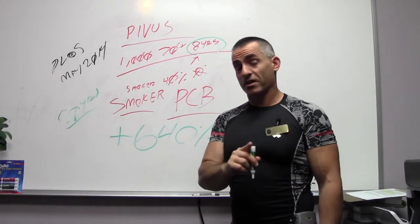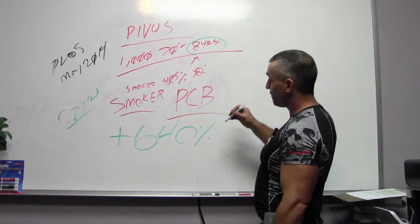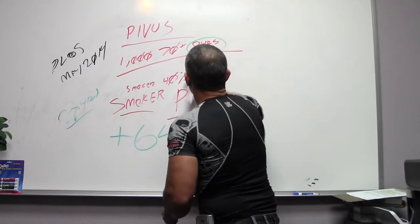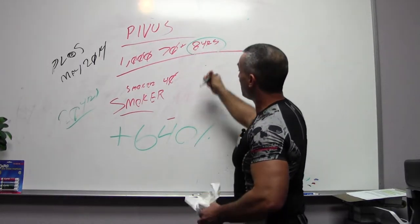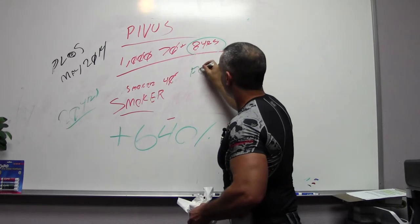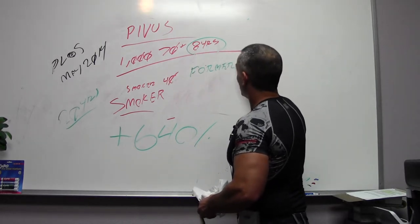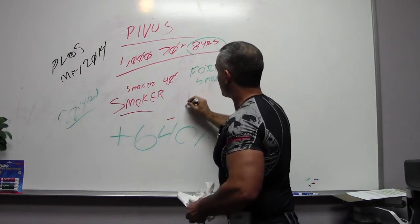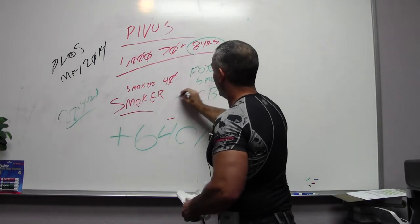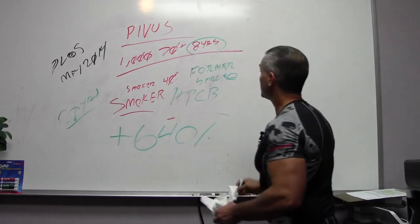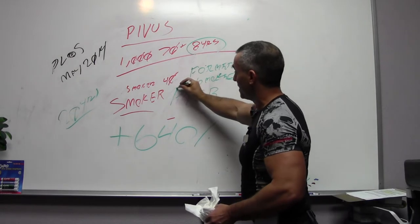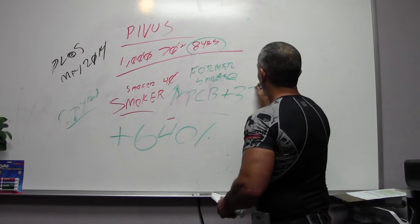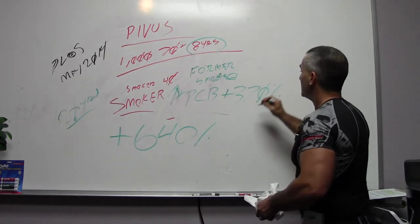Now here's the rough part, especially for former smokers. If you are a former smoker and you still had high levels of PCBs in the blood, your chance of dying over eight years was increased 370%. So,